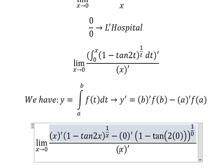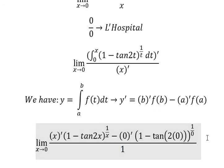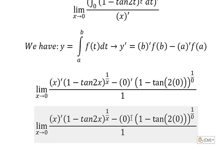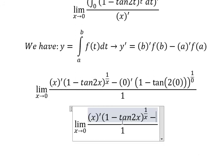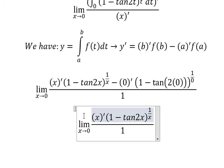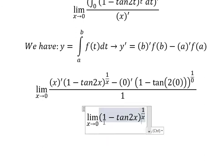This part gives us one. The constant term gives zero here, so everything equals zero. This part gives us one. Now we simplify and we have this result.